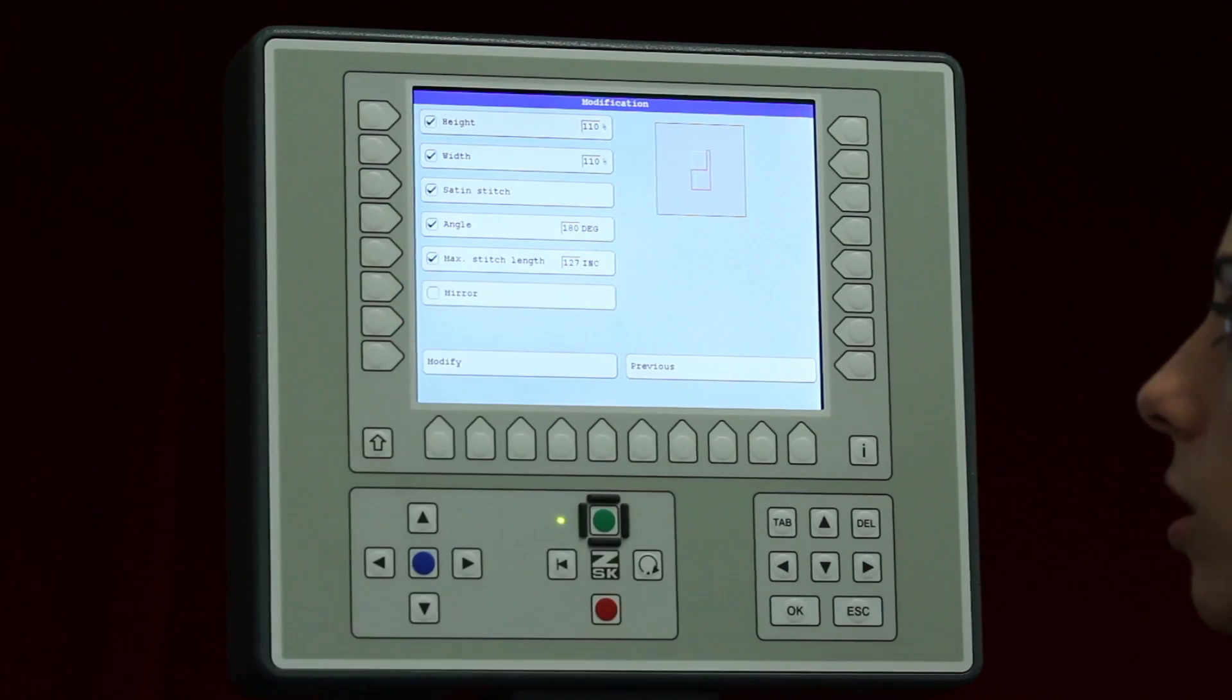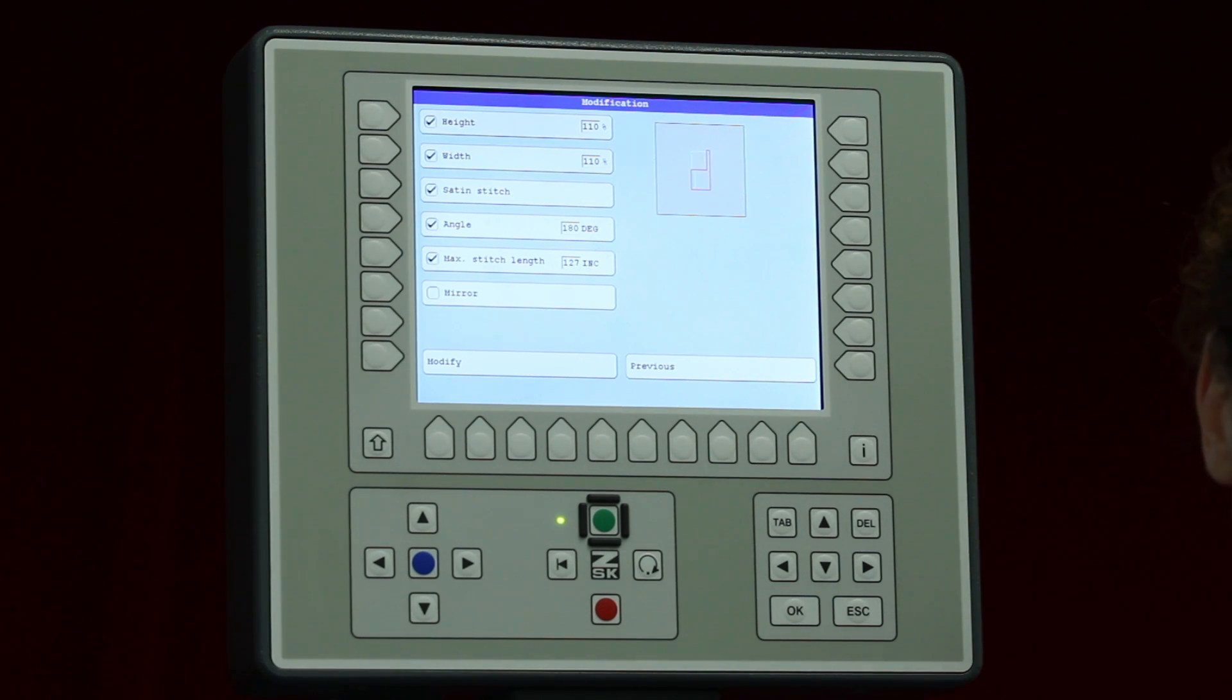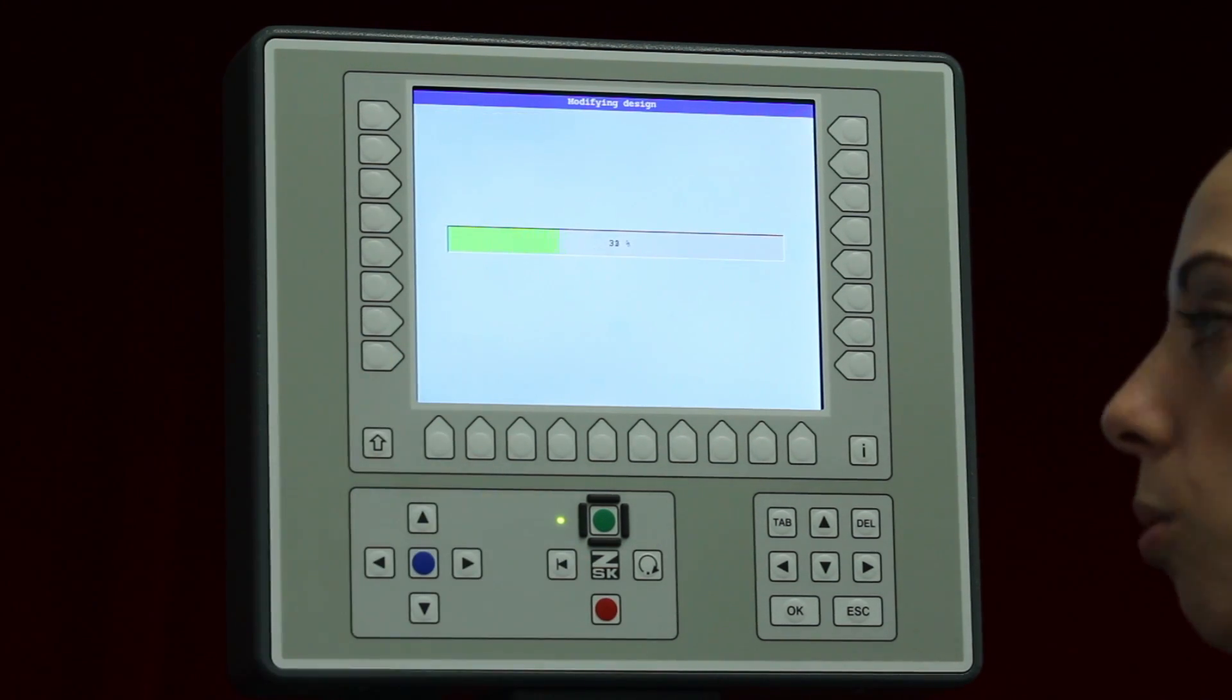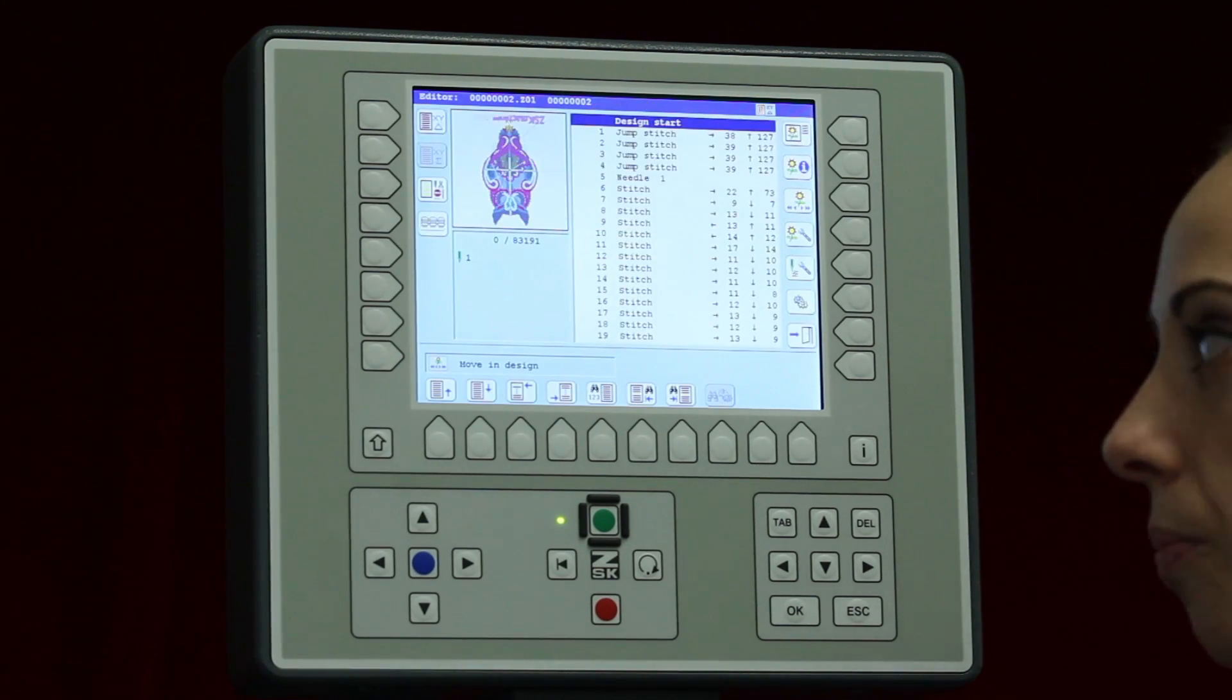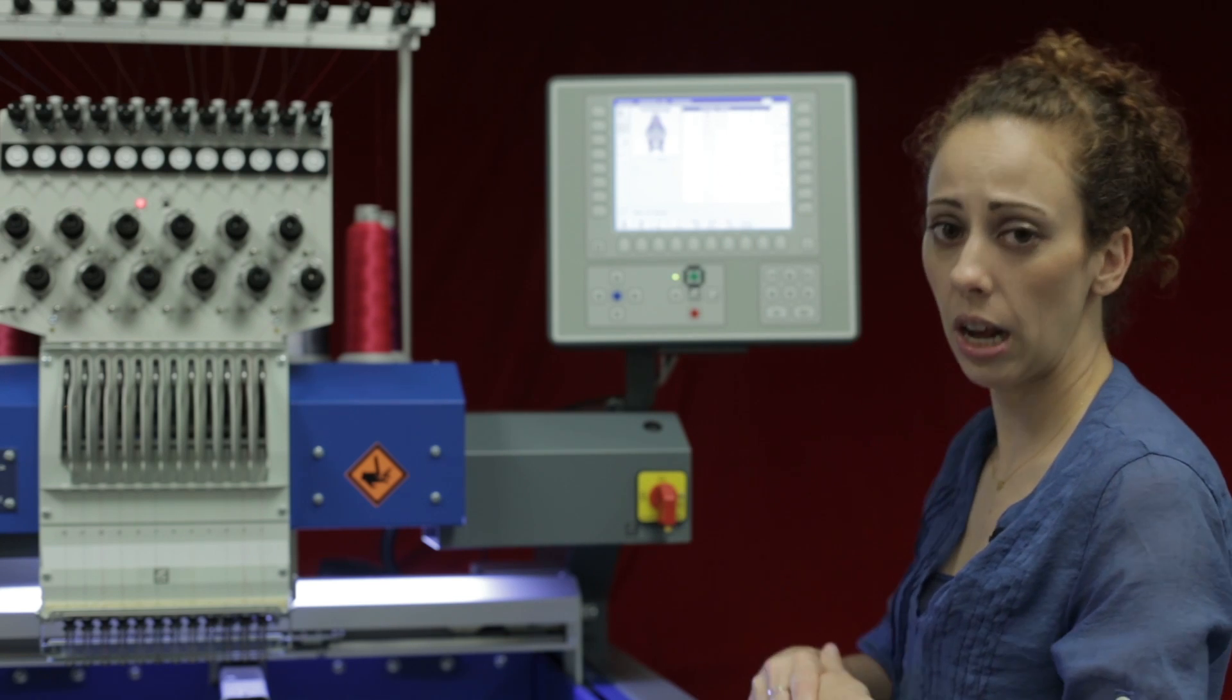So I'm not going to mirror it. I just have it rotated. I sized it a little bit. I also changed the satin stitch. I needed a little bit more satin stitch. So I hit modify. When I do hit modify it's going through and I'm back to my editor.